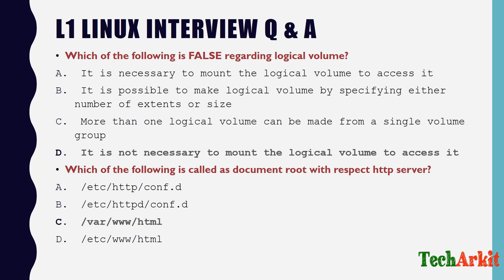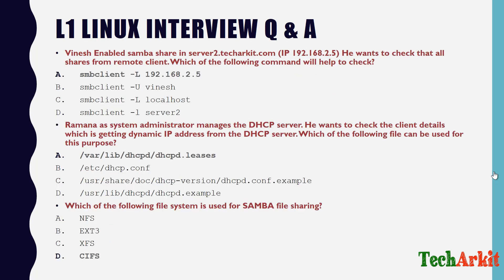Vinesh enabled a Samba share on server2.techarkt.com with IP address 192.168.2.5. He wants to check all shares from a remote client. Which command will help? You can query using the command: smbclient -L 192.168.2.5. If DNS is configured, you can also use the server name. This will list all Samba shares enabled on server2.techarkt.com.